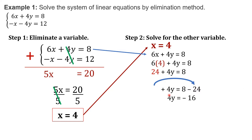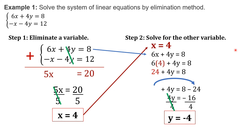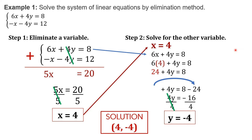Bring down 4y. We have to leave y alone, so we need to cancel this positive 4. To cancel, just divide both sides by positive 4. Cancel. Negative 16 divided by 4 will give us negative 4. Therefore, the solution of this system of linear equations is 4 and negative 4 — 4 for the value of x and negative 4 for the value of y.